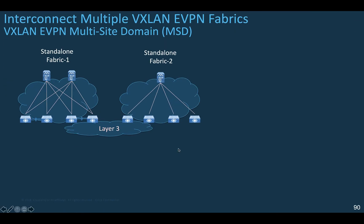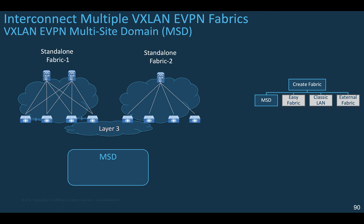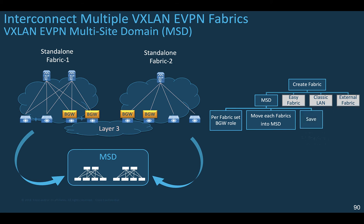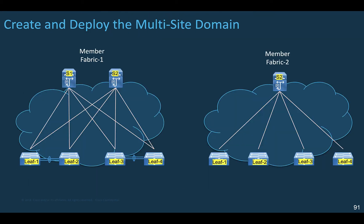DCNM automates the deployment of VXLAN EVPN multi-site in a few clicks, and this is very visual. The first thing we need to do is to create a new fabric with the MSD template. Then we make sure that the border gateways used for the inter-fabric connectivity have been set to the border gateway roles. We move the fabrics we wish to interconnect into the multi-site domain, save the configuration when ready, preview the configuration, and deploy it.